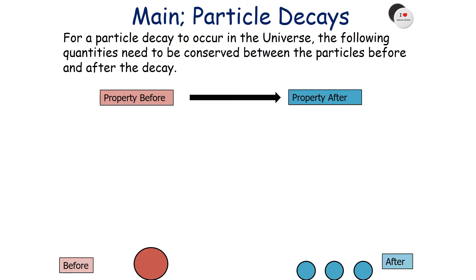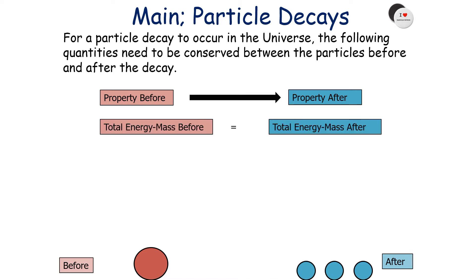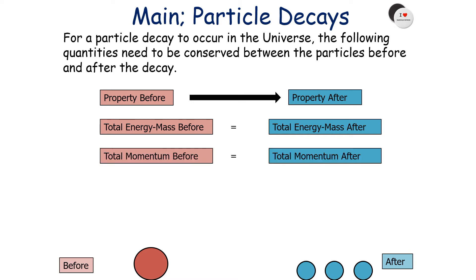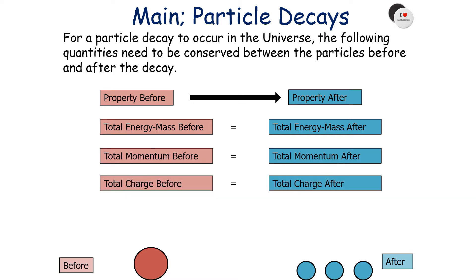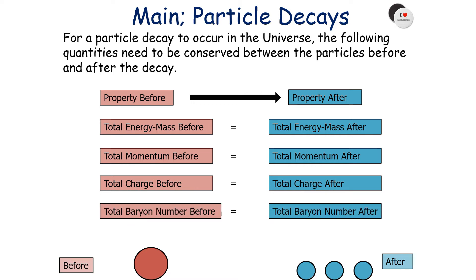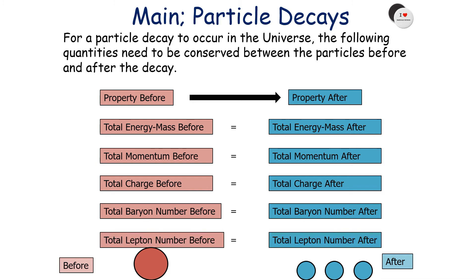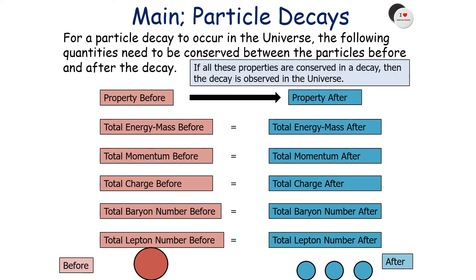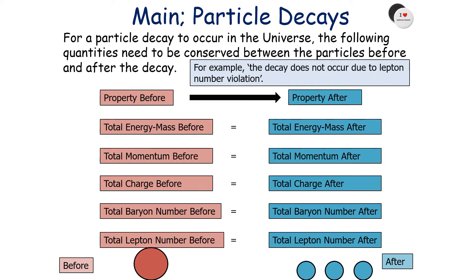For a particle decay to occur in the universe, the following quantities need to be conserved between the particles before and after the decay: total energy and mass, total momentum, total charge, total baryon number, and total lepton number. If all of these properties are conserved in the decay, then the decay is observed in the universe. If a property is not conserved, we say the decay does not occur due to a violation of that property — for example, a lepton number violation.